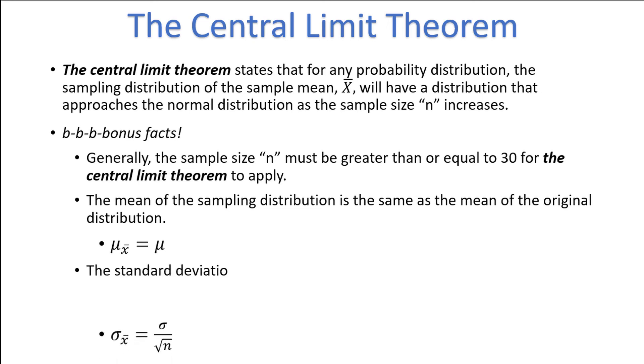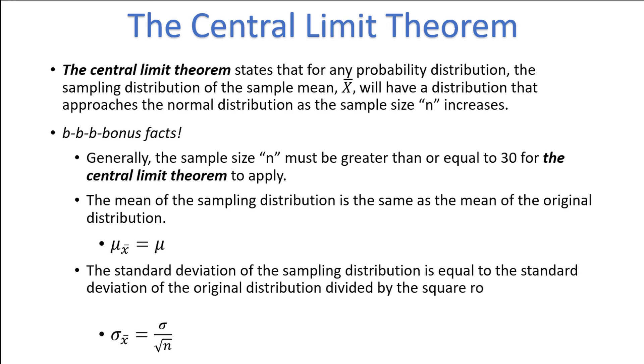This next point is extremely important. The standard deviation of the sampling distribution is equal to the standard deviation of the original distribution divided by the square root of the sample size. This means that the sampling distribution has a smaller standard deviation than the original distribution. The sample means are less spread out than are the observations in the original distribution.